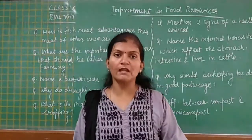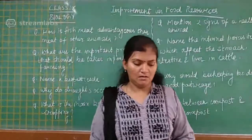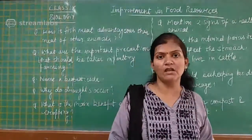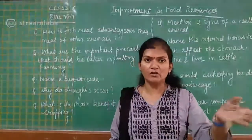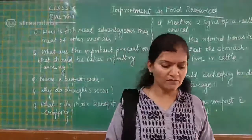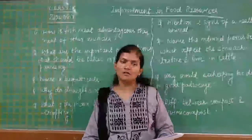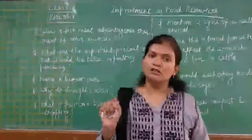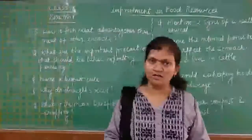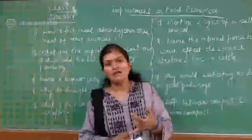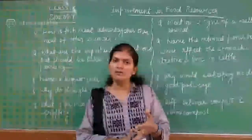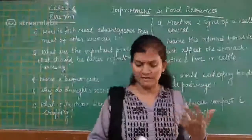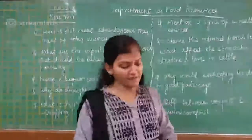If you have any doubt, please post it in the comment box. Water looks bluish from a distance because of the sky, so the Blue Revolution refers to fish production. The Green Revolution is for wheat, rice, and grains. The Yellow Revolution is for pulses.